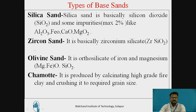The second base sand is zircon sand. It is basically zircon silicate, ZrSiO2. It has high chemical and thermal stability compared to other sands. It is generally used as a facing sand for ferrous casting. The next is olivine sand, which is an orthosilicate of iron and magnesium, MgFeSiO4. It is suitable for non-ferrous alloys.